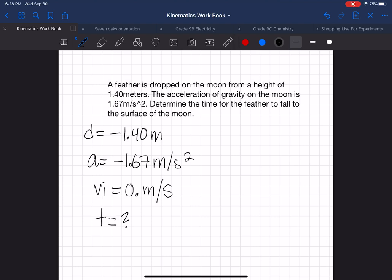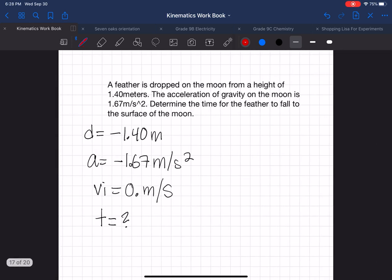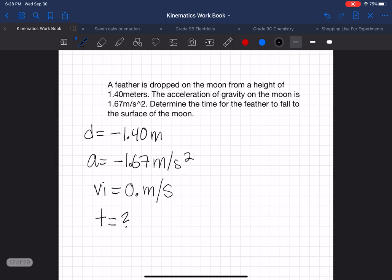Time equals question mark. So how are we going to solve for this one? Well, let's go back to our formulas and see which formula we can use. We have distance, acceleration, the initial speed, and time. Well, well, well, look at here, we can use this guy right here because we have the initial speed, distance, acceleration, and time. It does not require the final speed, so we can definitely use this formula to solve for time.